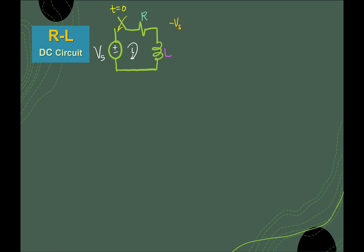So therefore, this is: Vs minus Vs plus Vr — the voltage across the resistor — plus Vl, the voltage across the inductor, is equal to zero.